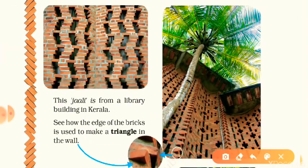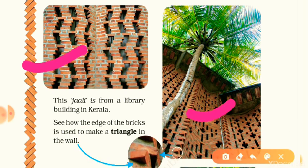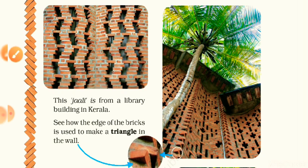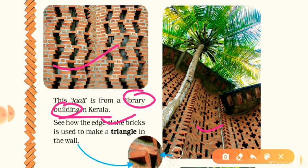On the next page there are some other jali patterns. This jali is from a library building in Kerala. These two jali patterns are from a library building in Kerala, which is a state of India.